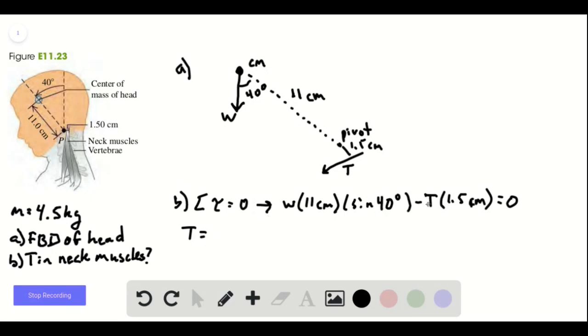So add T times 1.5 centimeters to both sides, divided by 1.5 centimeters, and this works out to be 208 newtons as the tension in her neck muscles.